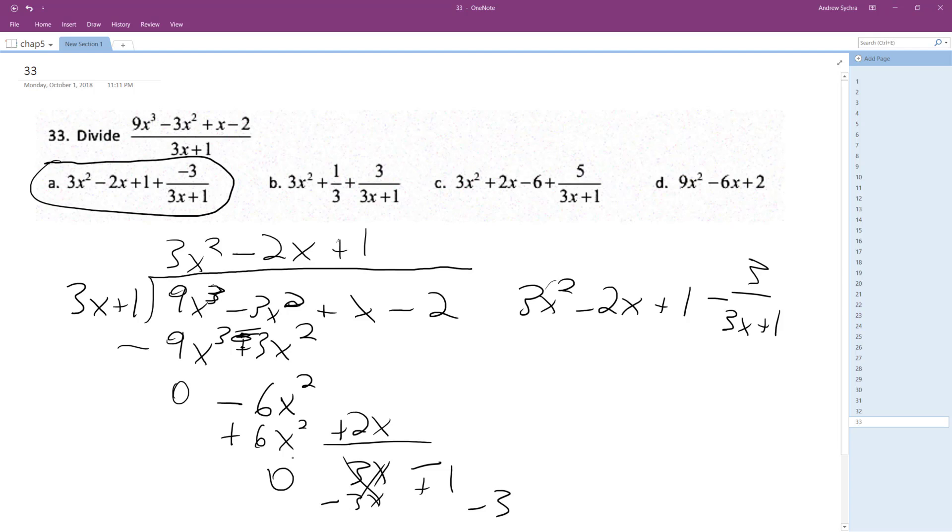So what happened here is I did all this and we end up with a remainder of negative 3, and then we got 3x squared minus 2x plus 1 minus the remainder 3 over the divisor which is 3x plus 1. And that looks a lot like answer A.